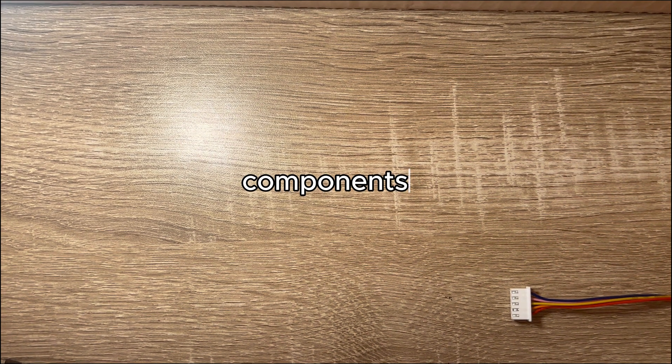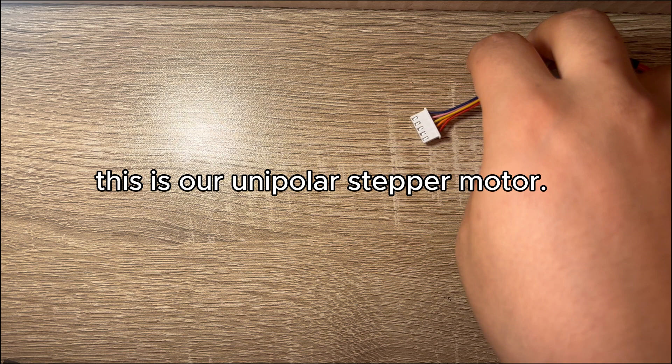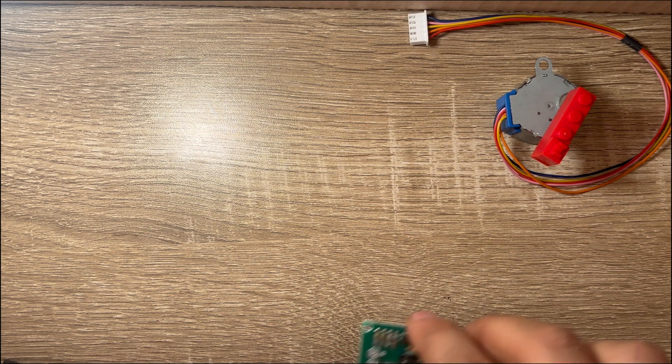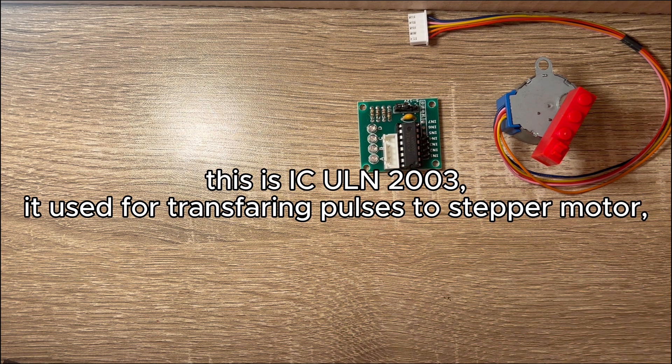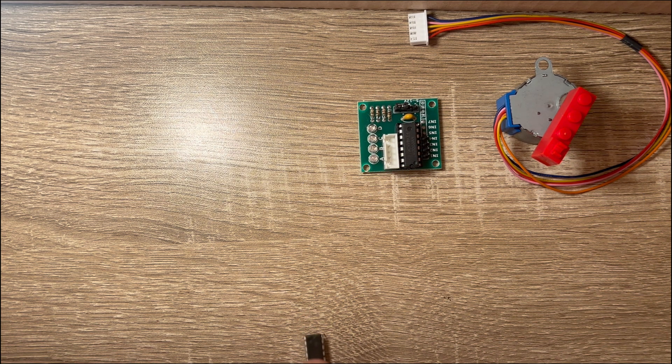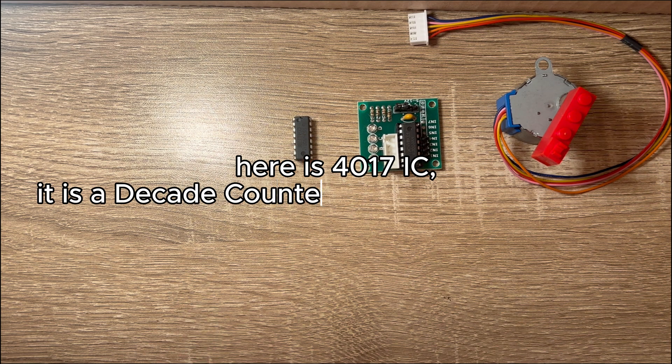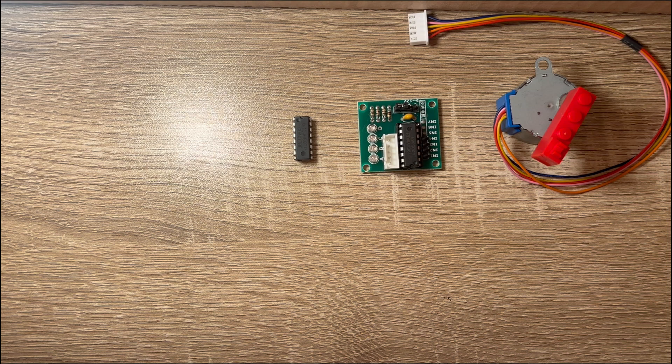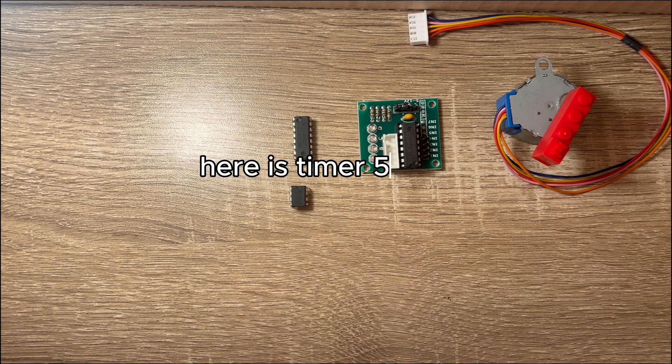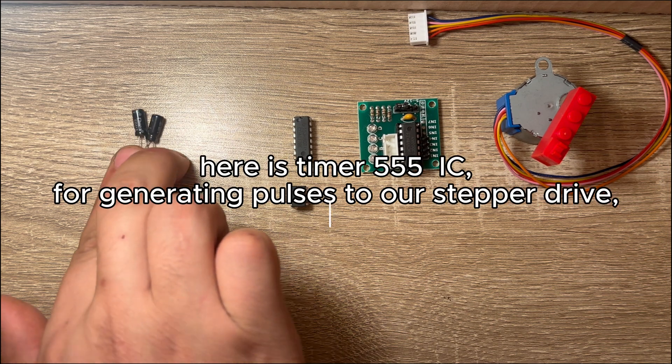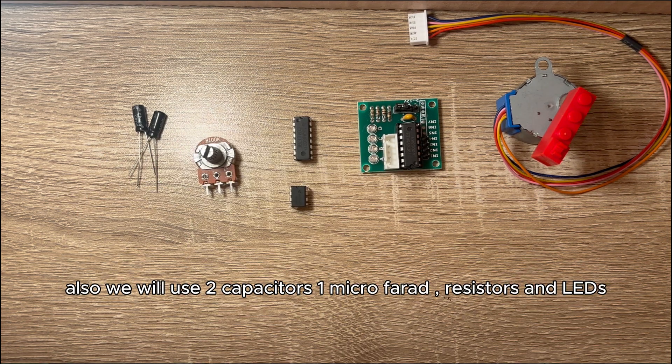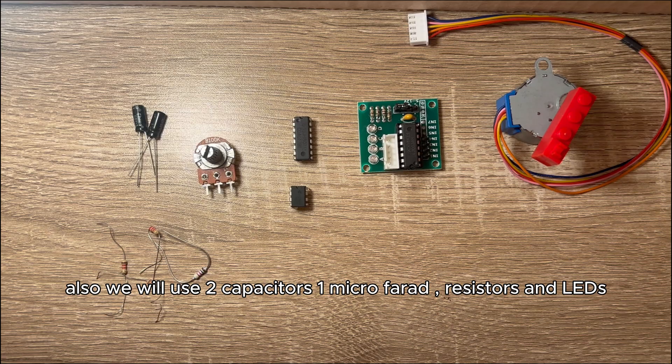Components. This is our unipolar stepper motor. This is IC ULN 2003, it's used for transferring pulses to stepper motor. Here is 4017 IC, it is a decade counter with decoded output. Here is timer 555 IC for generating pulses to our stepper drive. Also we will use two capacitors 1 microfarad, resistors and LEDs.